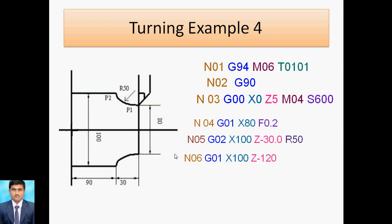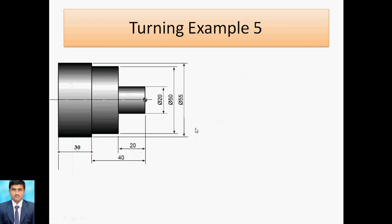To summarize example four: for the circular interpolation segment, specify clockwise (G02) or anti-clockwise (G03), mention the endpoint X100 Z minus 30, and the radius R50. Only those values change from a standard linear program; everything else remains the same.